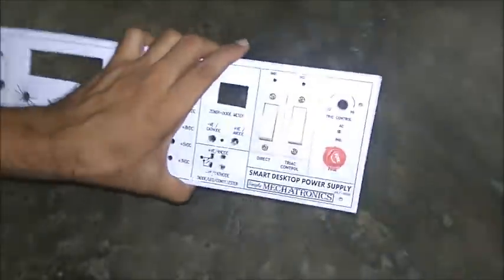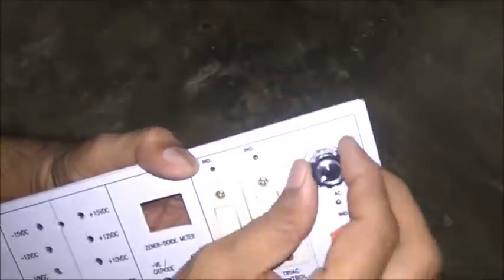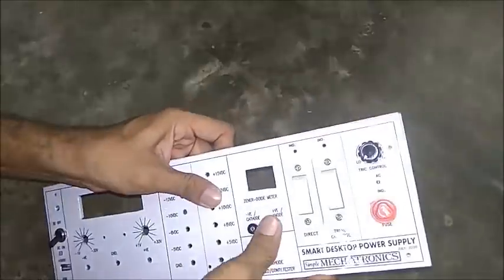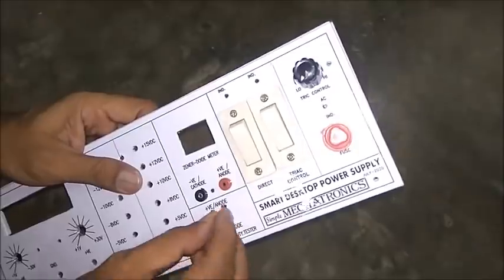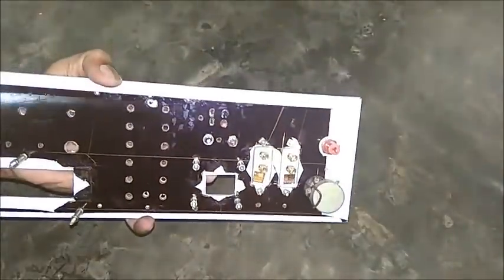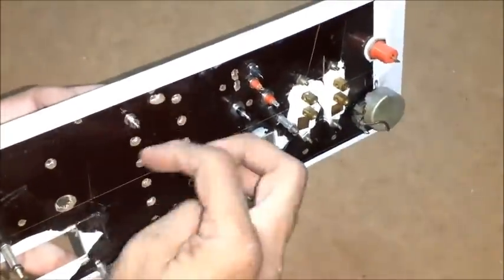Fix a fuse holder. Control for TRIAC with a knob. Fix a switch for DC power control in series with transformer primary. Fix connectors for Zennometer and Continuity meter. Fix connectors for step DC outputs from minus 15 to plus 15.